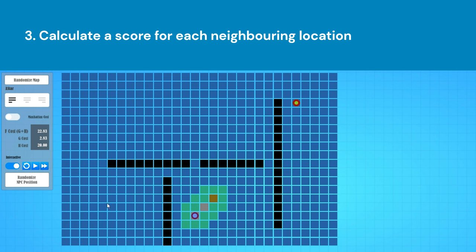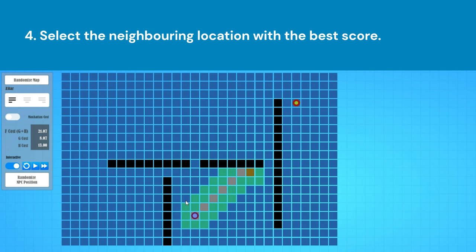Step 3: Calculate a score for each neighboring location. This score represents how good or bad it is to move to that location. The cost typically contains components such as cost incurred and probable cost to reach the destination. Factors like distance, obstacles, and any special rules are considered. Step 4: Select the neighboring location with the best score — this new cell has now become the new location.